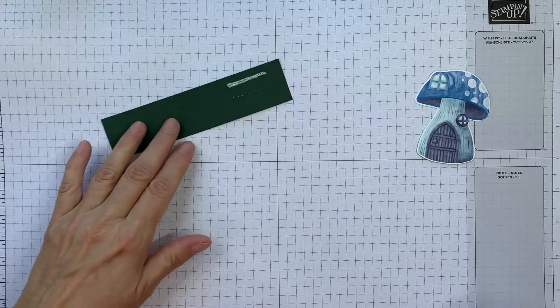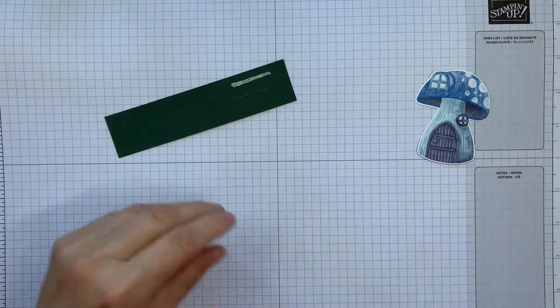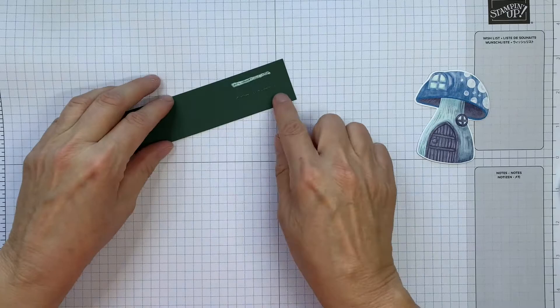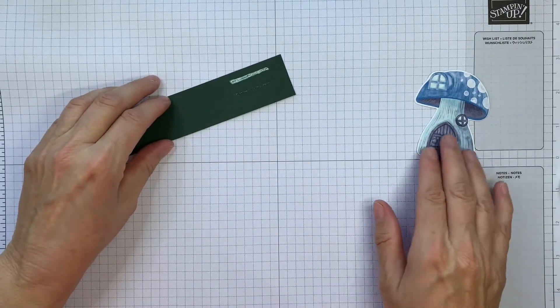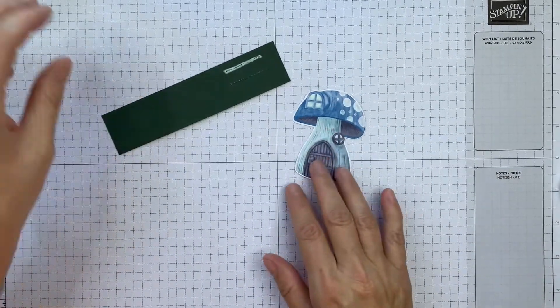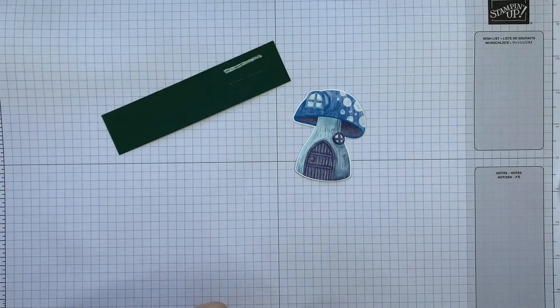So I can see from this test piece that the very thin strip is probably too thin for what I'm wanting. I'm going to use it on this little toadstool house.